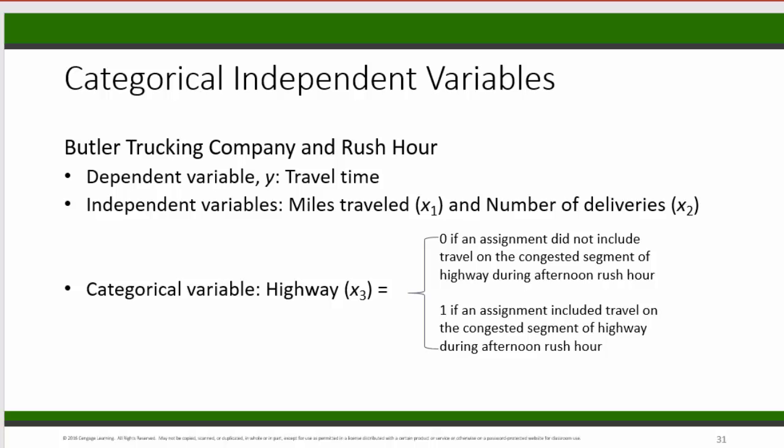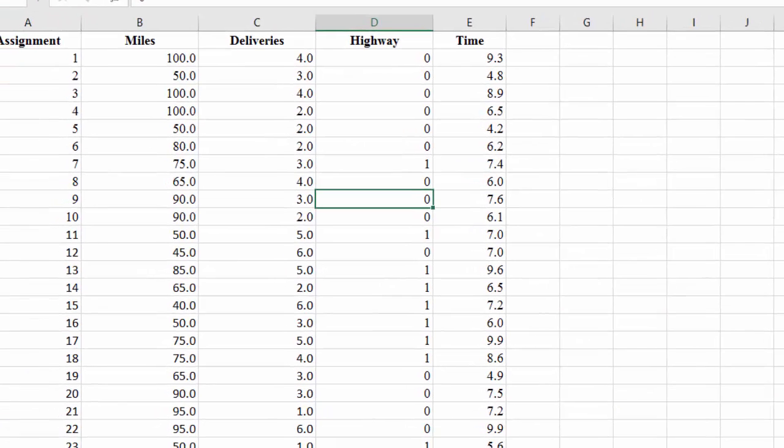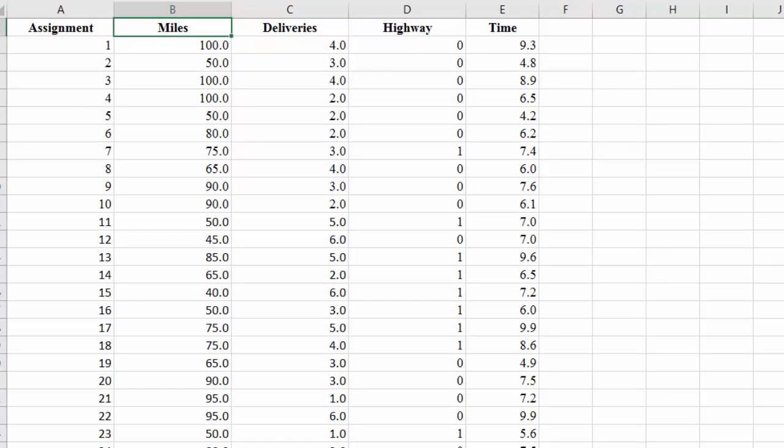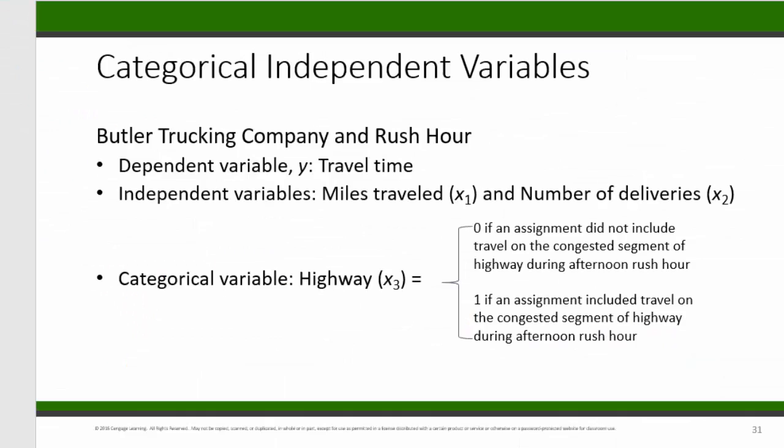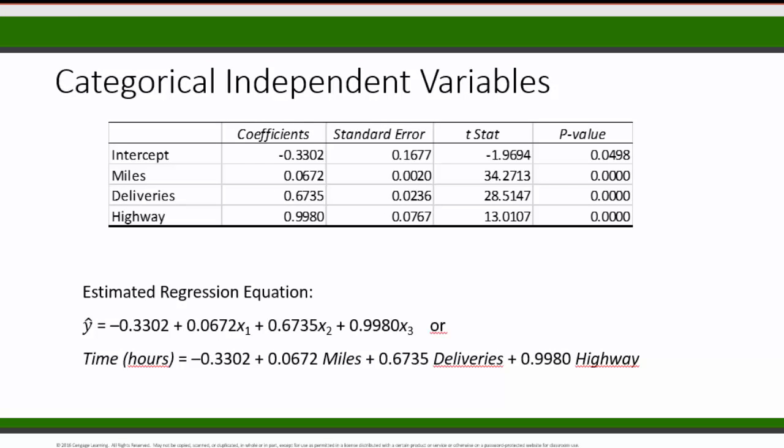We have a new data set that includes this new variable. Running a regression with these three variables as the independent variables and time as the dependent variable gives us the output shown here. First, let's see if all the variables are statistically significant. Yes, the p-values for all three independent variables are less than or equal to 0.05. In fact, they are all equal to 0.